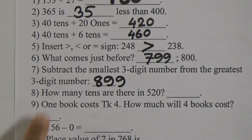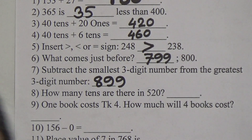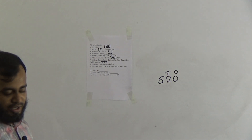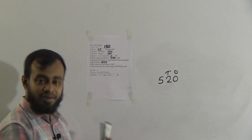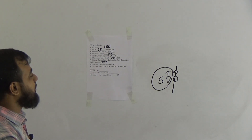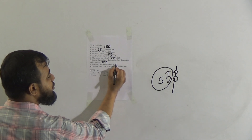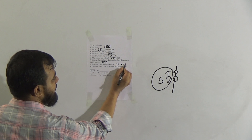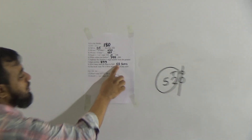Question number 8: how many tens are there in 520? In 520, the ones place is 0, the tens place is 2 — but we can also consider the hundreds digit as part of the tens count. Since there is no separate hundreds or ones question, the full tens value is 52. So there are 52 tens in 520. Conversely, 52 tens equals 52 and a 0, which is 520.